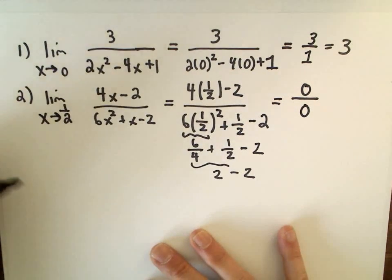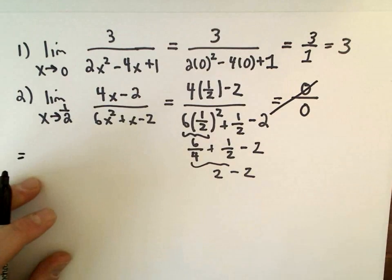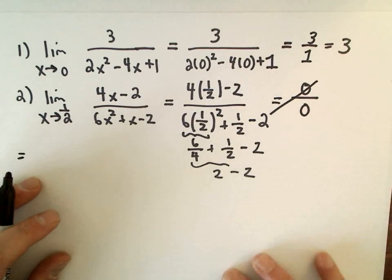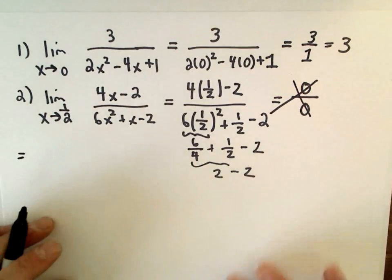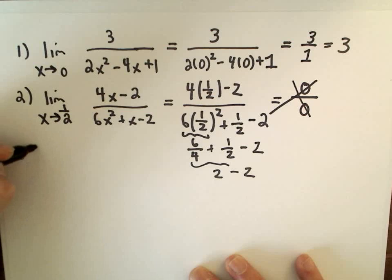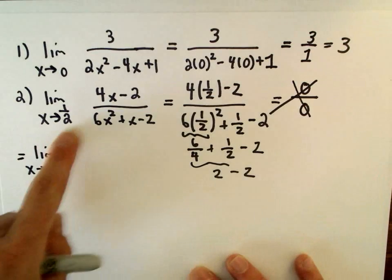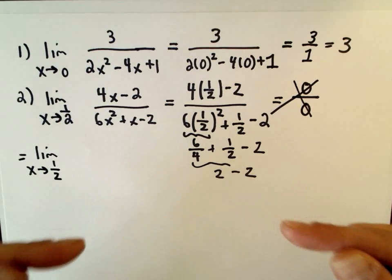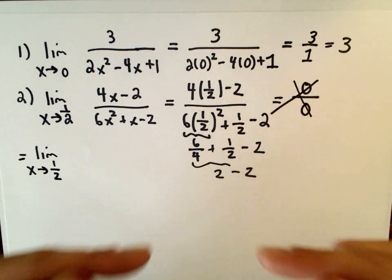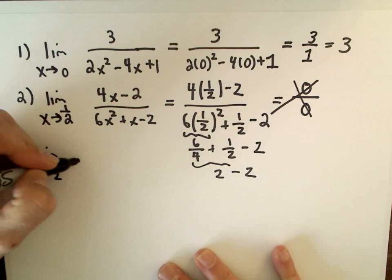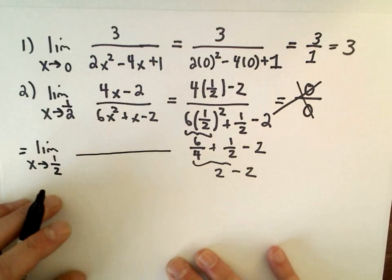So, okay, we're getting 0 over 0. In this case, what's going to happen is you'll be able to factor. Okay, so we're not done. Some people will say, oh, this is undefined, but that's absolutely not the correct thing to say, because we'll see the limit will still be defined. And it doesn't matter that at 1/2 this function is undefined. When we're doing a limit, we're taking numbers closer and closer and closer to 1/2. That's what we're interested in.